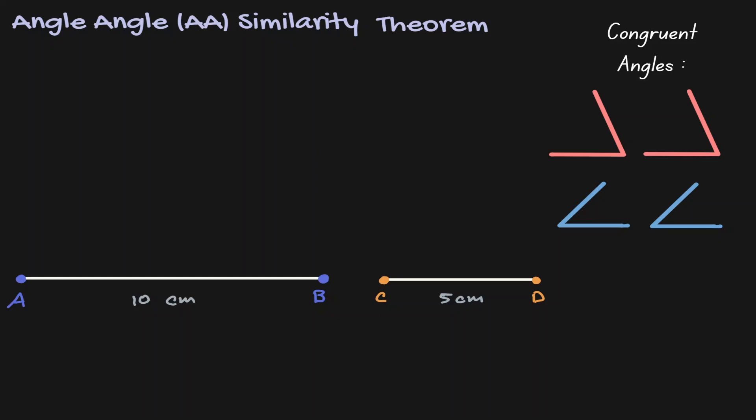In the bottom we have two line segments: AB which has a length of 10, and CD which has a length of 5. On the right hand side we have two pairs of congruent angles — the red congruent angles and the blue congruent angles.